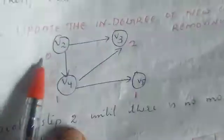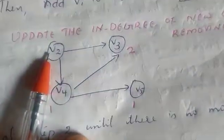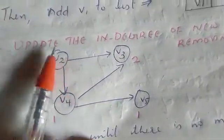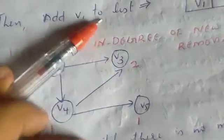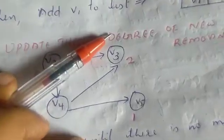Now we update the vertex in the next step. If we want to update the vertex in the next step, we can remove the vertex with in-degree 0 again.